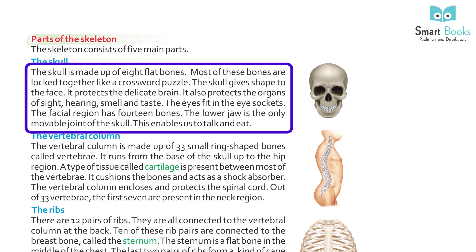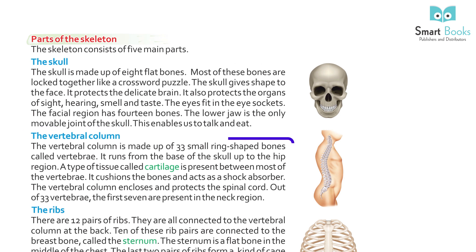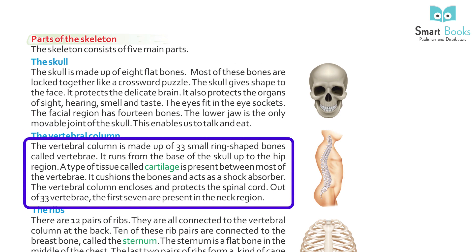The eyes fit in the eye sockets. The facial region has 14 bones. The lower jaw is the only movable joint of the skull. This enables us to talk and eat. The vertebral column is made up of 33 small ring-shaped bones called vertebrae.